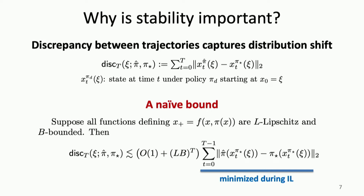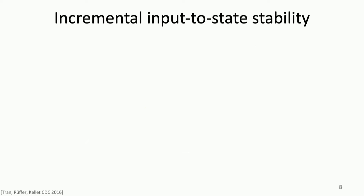The expression on the right is what you minimize in imitation learning, and we can do a good job of keeping that small. But you end up with an exponential dependence on the time horizon t — we don't like that. It means I have to collect a lot of data, and the amount grows bigger as the horizon grows. But if we zoom out, we can view this as characterizing the difference between trajectories where one is a nominal expert policy and one is a perturbed version, where the perturbation is the mismatch between my learned and expert policy. This is studied extensively in nonlinear robust control through the notion of incremental input-to-state stability.